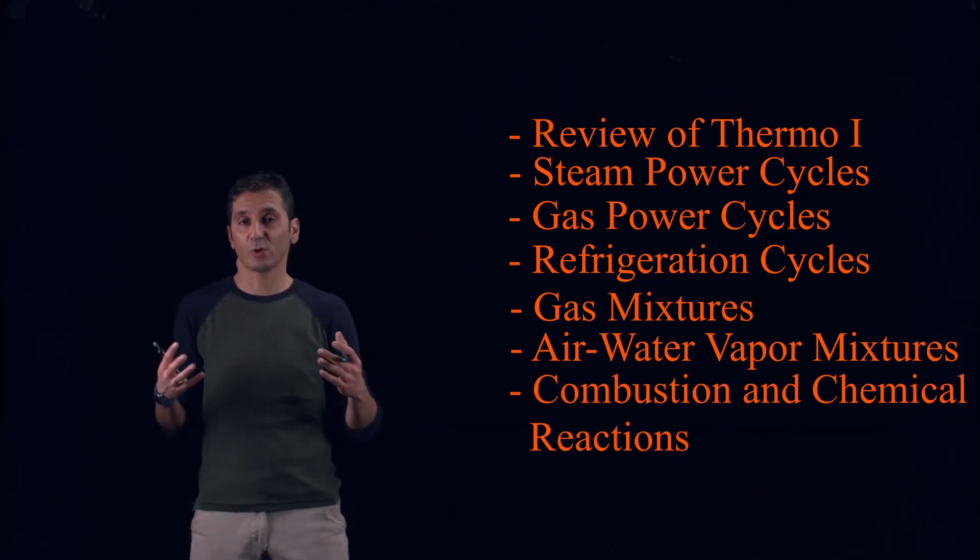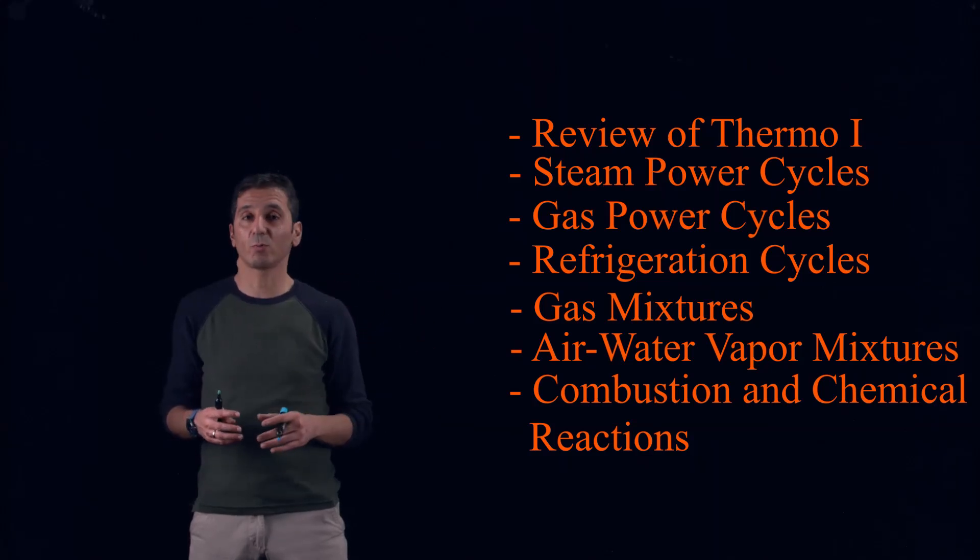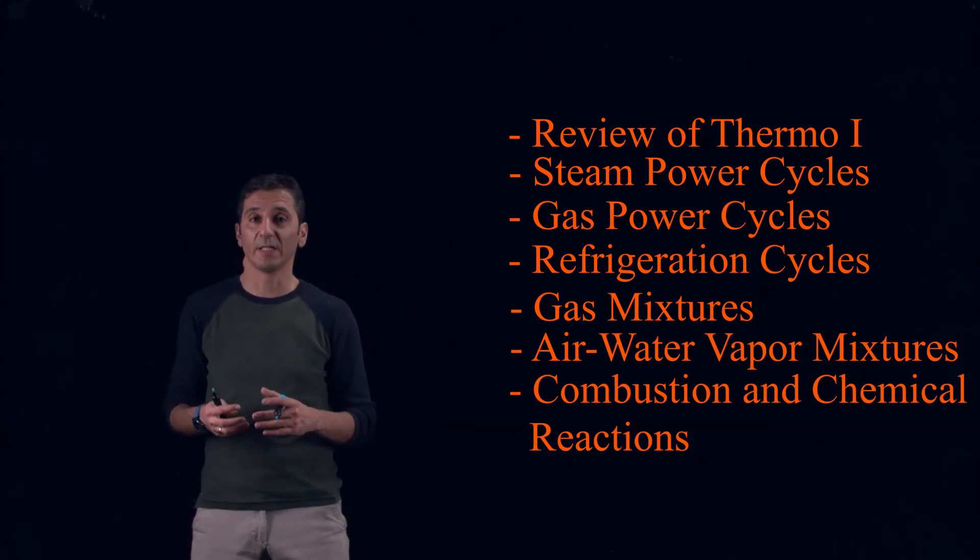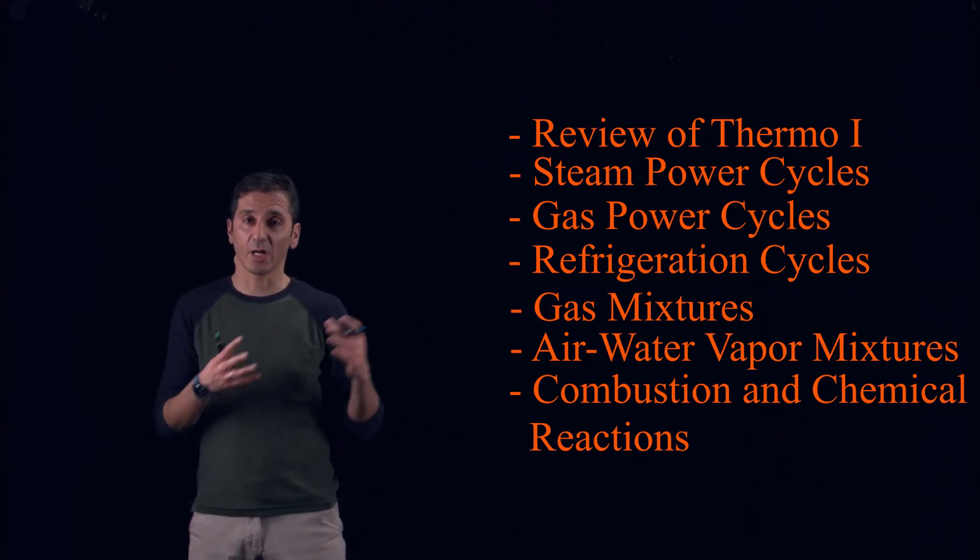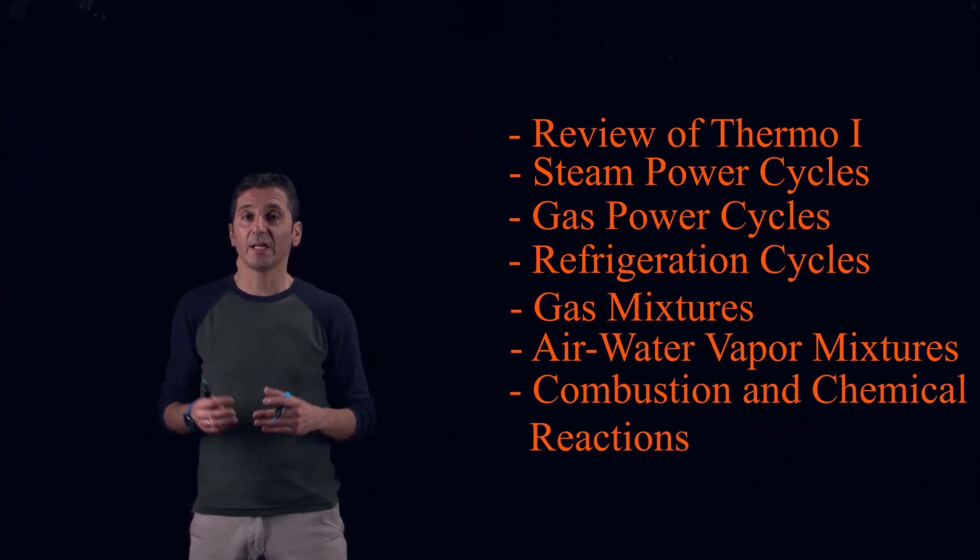If you remember well, in Thermodynamics 2 we were dealing with, for example, combustion chambers in the Brayton cycle, and we were typically given the heat input. In this part, we will learn how to start from the mixture between the fuel and the air and get the products through chemical reaction.